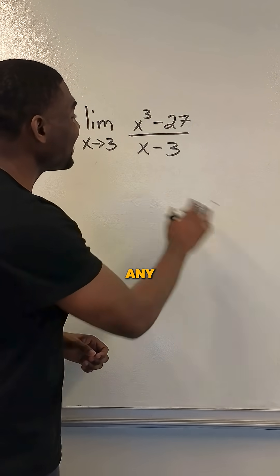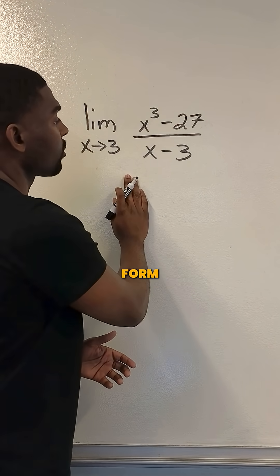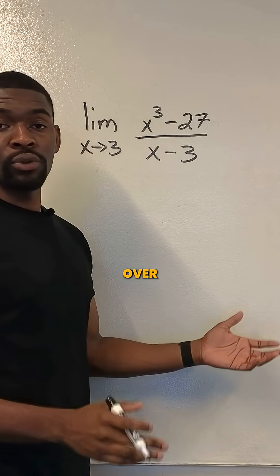How you would approach a problem like this is like any typical limit, but when you plug in 3, we get an indeterminate form: 27 minus 27 over 3 minus 3.